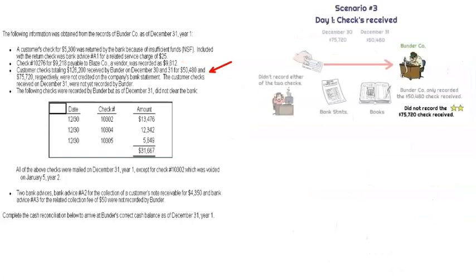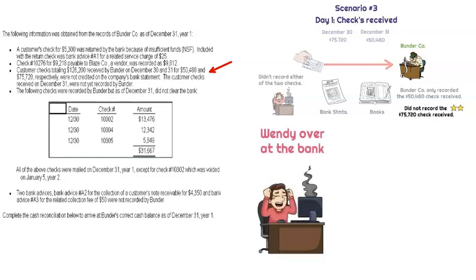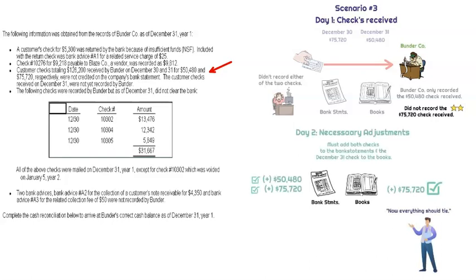Next, customer checks totaling $126,200 were received on December 30th and 31st — $50,480 and $75,720 respectively. Neither check was recorded on the bank statement, so there was a mess-up at the bank. But we also have a mistake on our end: the December 31st check for $75,720 was not recorded in the books. Gerald properly recorded the $50,480 check, but forgot the $75,720. Meanwhile, Wendy at the bank failed to record both checks.